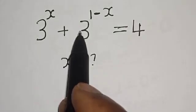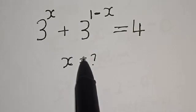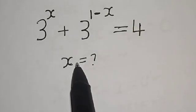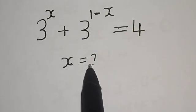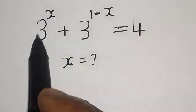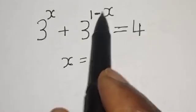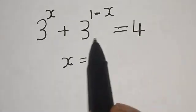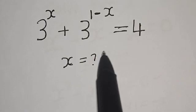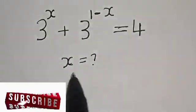3 raised to power x plus 3 raised to power 1 minus x is equal to 4. What is the value of x? Hi everyone, welcome to my class. In this class we want to find the value of x from this given exponential equation: 3 raised to power x plus 3 raised to power 1 minus x is equal to 4. Before we proceed, please don't forget to like, share, comment and subscribe.